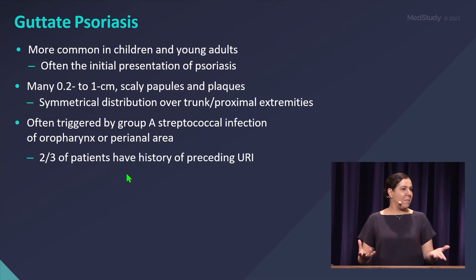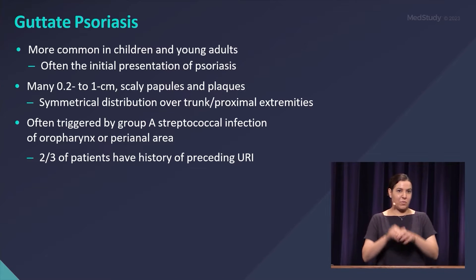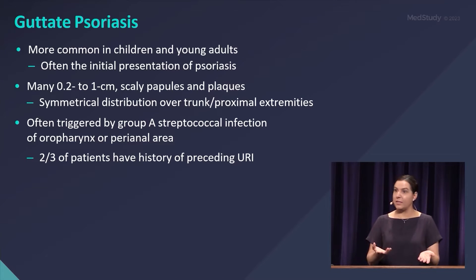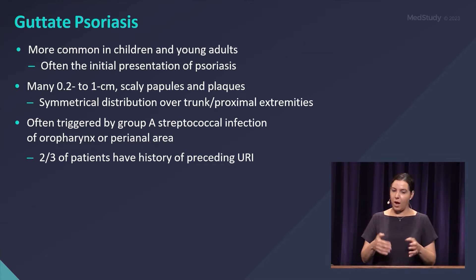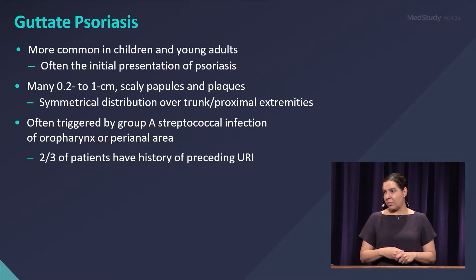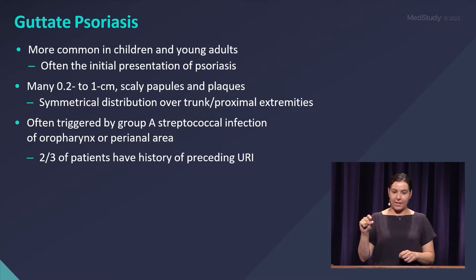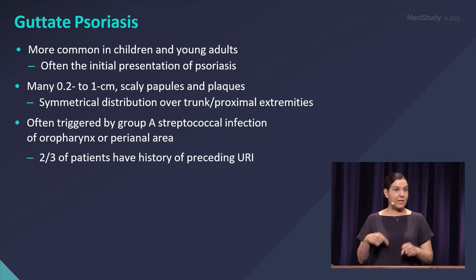Guttate psoriasis is probably the main differential diagnosis of pityriasis rosea, especially when it's on the trunk in that Christmas tree pattern. This type of psoriasis is more common in children and young adults and is often the initial presentation of psoriasis. You'll have those small scaly papules and plaques in a symmetric distribution on the trunk and proximal extremities.